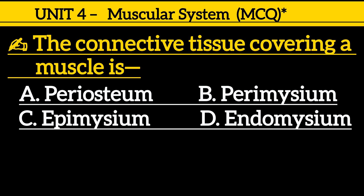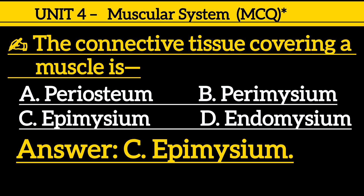Next one is: the connective tissue covering a muscle is — option A: periosteum, option B: perimysium, option C: epimysium, option D: endomysium. Correct answer is option C, epimysium.